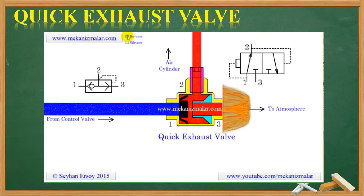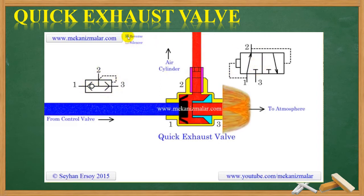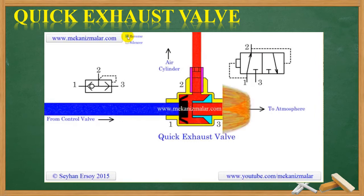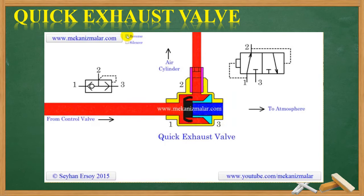If we want slow forward and very rapid return speed for the piston, one way is to use a very large control valve with a speed control valve to regulate forward speed. However, by using a quick exhaust valve, we can accomplish the same task with a small control valve. Since the valve is small, the forward motion will be slow, but during the return stroke we short-circuit the air exhaust through the quick exhaust valve, causing very rapid piston retraction. There are two different symbols for the quick exhaust valve found in the literature.